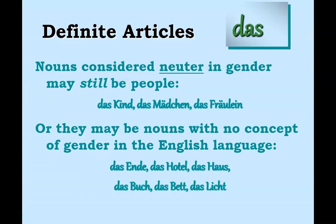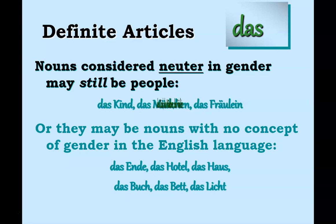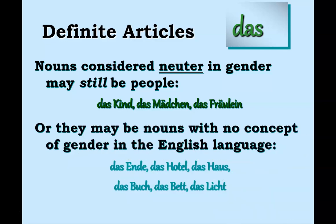German also has a third gender — 'das,' which is considered neuter. There are people who take the 'das' article, considered neuter — here are three examples. You also have a number of 'das' or neuter nouns in German that are not assigned masculine or feminine and take the 'das' or neuter form.